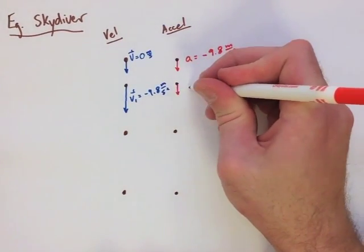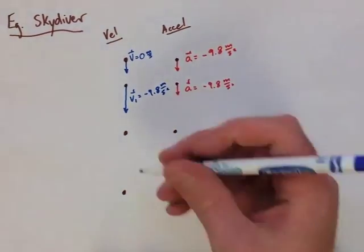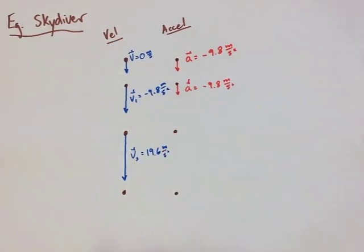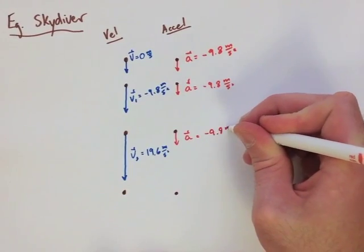Now, each of our dots are representing one second. So every second, we're adding 9.8 meters per second to our velocity. We're going in the negative direction because we're moving down. So we have a negative velocity each time.